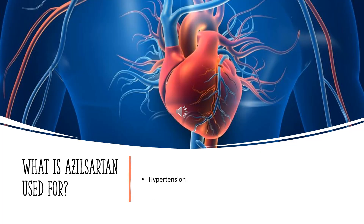What is azulsartan used for? Azulsartan medoxomil is indicated for the treatment of hypertension to lower blood pressure in patients over 18 years of age. It may be used either alone or in combination with other antihypertensive agents.